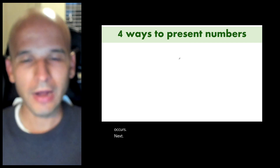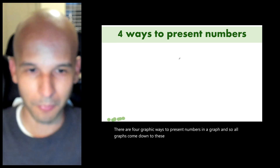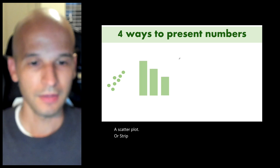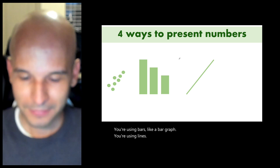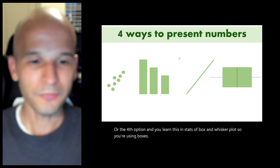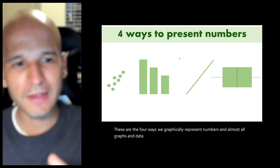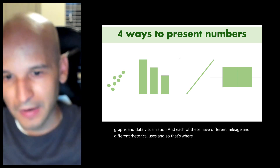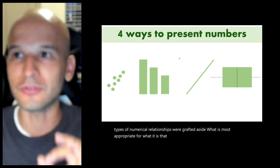There are four graphic ways to present numbers in a graph, and all graphs come down to these four methods: dots (like a scatter plot or strip plot), bars (like a bar graph), lines (like a line graph), or boxes (a box-and-whisker plot, which you learned in stats). These are the four ways we graphically represent numbers. Each has different mileage and different rhetorical uses, and when we discuss the seven types of numerical relationships, you'll decide what is most appropriate for the point you're trying to make.